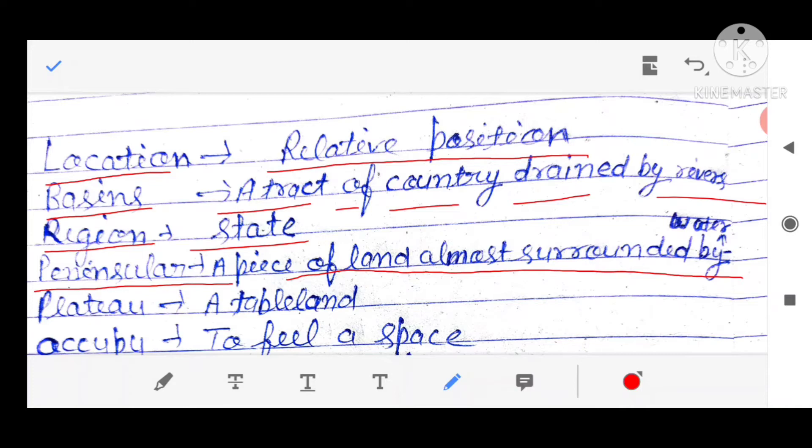India is also peninsular क्योंकि इसके east में Bay of Bengal है, west में Arabian Sea और south में Indian Ocean. तो तीनों तरफ से पानी से घिरा होगा इसलिए इसको बोलेंगे peninsular. Plateau, a tableland, ऐसी जमीन जिसका structure table के नुमा हो.